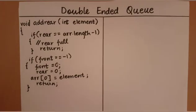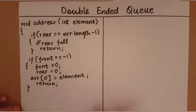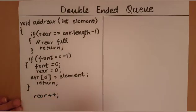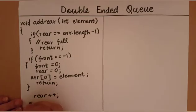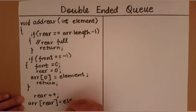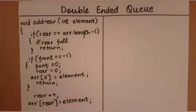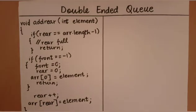When we come past that special case, we deal with all the normal cases. To add to the rear of the queue, we simply increment rear by one, then store the element in the array at the index equal to rear. After this, the function's work is done. This is how you add to the rear of the queue.